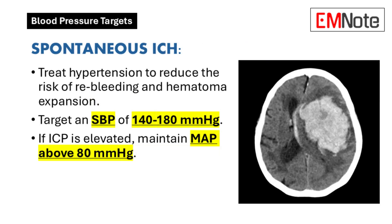For spontaneous intracerebral hemorrhage, hypertension management is indicated to minimize re-bleeding risk and hematoma expansion. Systolic blood pressure should be maintained between 140 and 180 mmHg. When intracranial pressure is elevated, mean arterial pressure must be kept above 80 mmHg.